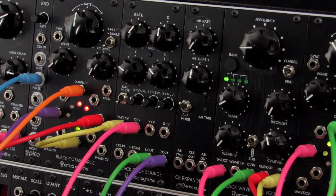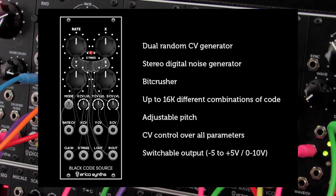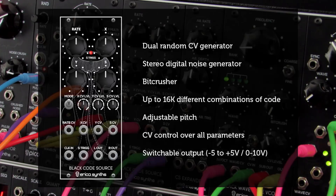Hello, I am Marta from EricaSynths, and in the next few minutes I will introduce you to our latest module of the Black series: the Black Code Source and the expander module. It is a unique stereo digital noise source which can be used as a stereo sound source as well as a dual generator of pseudorandom control voltages. It uses a complicated calculation of polynomials of various configurations — technology that comes from data scrambling techniques, used in several classic drum machines as well as arcade and computer sound chips.